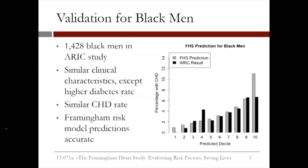For some populations, the Framingham model was accurate. For the ARIC study that tested the model with black men, this figure shows a bar graph of how the Framingham predictions compare with the actual results. The gray bars are the predictions, and the black bars are the actual outcomes. The patients are sorted on the x-axis by predicted risk, and on the y-axis by the percentage of patients in each group who actually developed CHD.